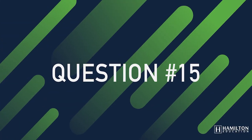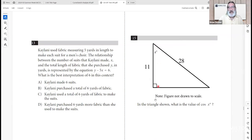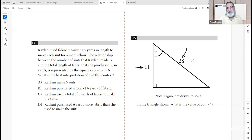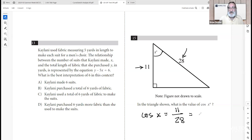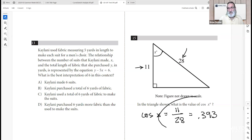Number fifteen: in this triangle, find cosine of angle x. The side of length 11 is adjacent to x, and 28 is the hypotenuse — opposite the right angle. By SOH-CAH-TOA, cosine equals adjacent over hypotenuse, which is 11 over 28, approximately 0.393.